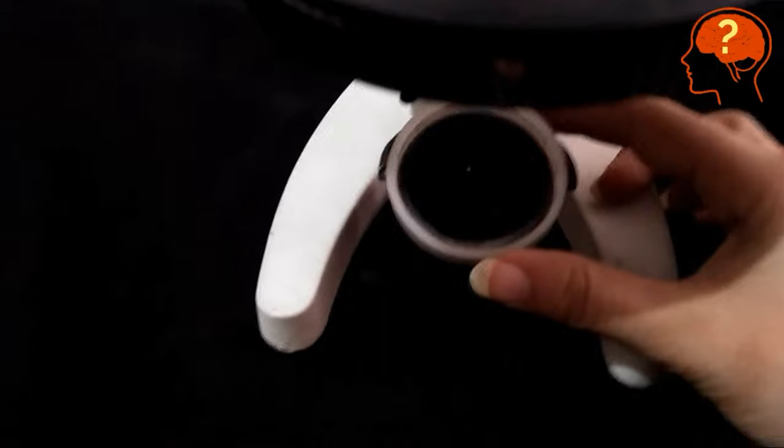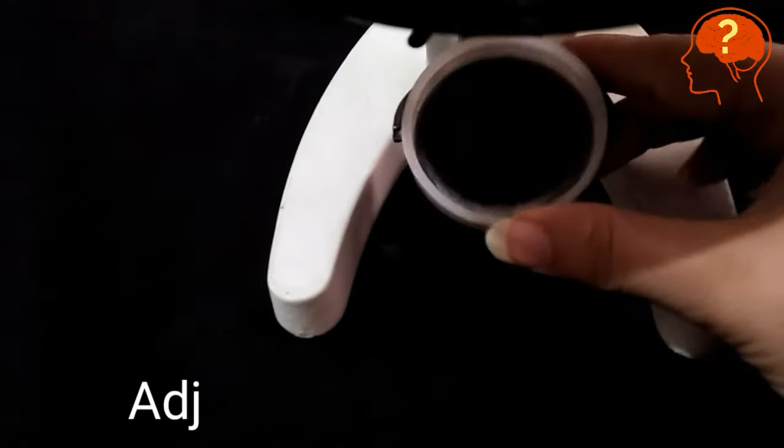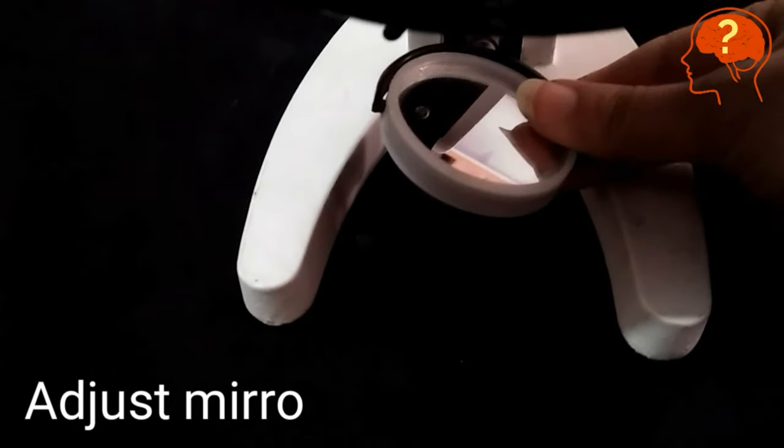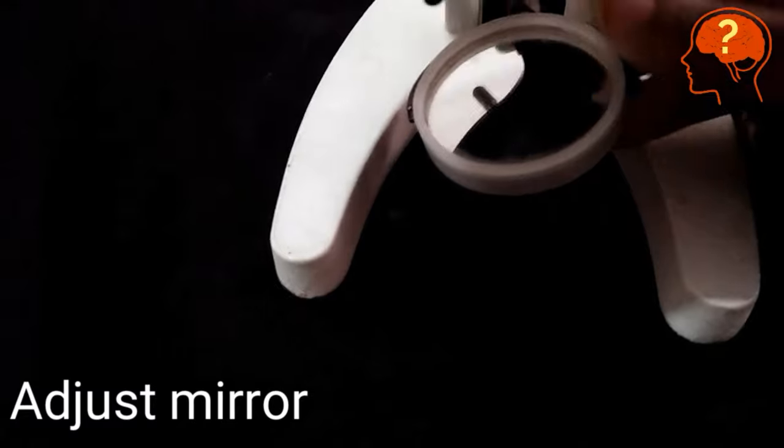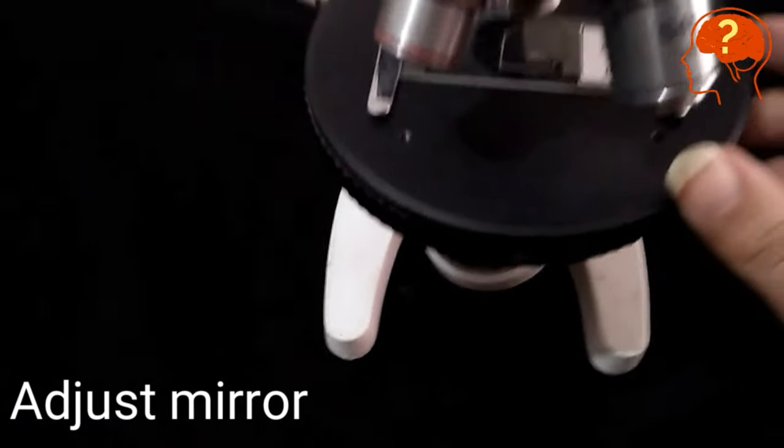When you place the slide, first you will adjust the mirror. You will move it from left to right. Where you know maximum light, you will set it.